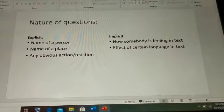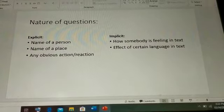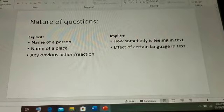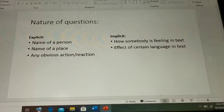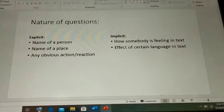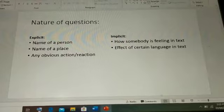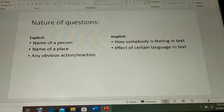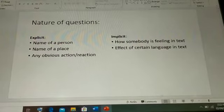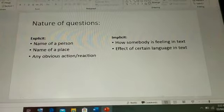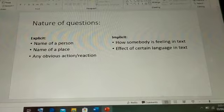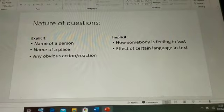Okay, the questions we asked and which we are called having explicit meaning, they are sometimes the name of a person or a name of a place or any obvious action or reaction or thing, anything present in the text. Whereas implicit meaning depends on how somebody is feeling in the text, it is not written clearly that he felt sad or he felt happy, but it is obvious in his reaction.